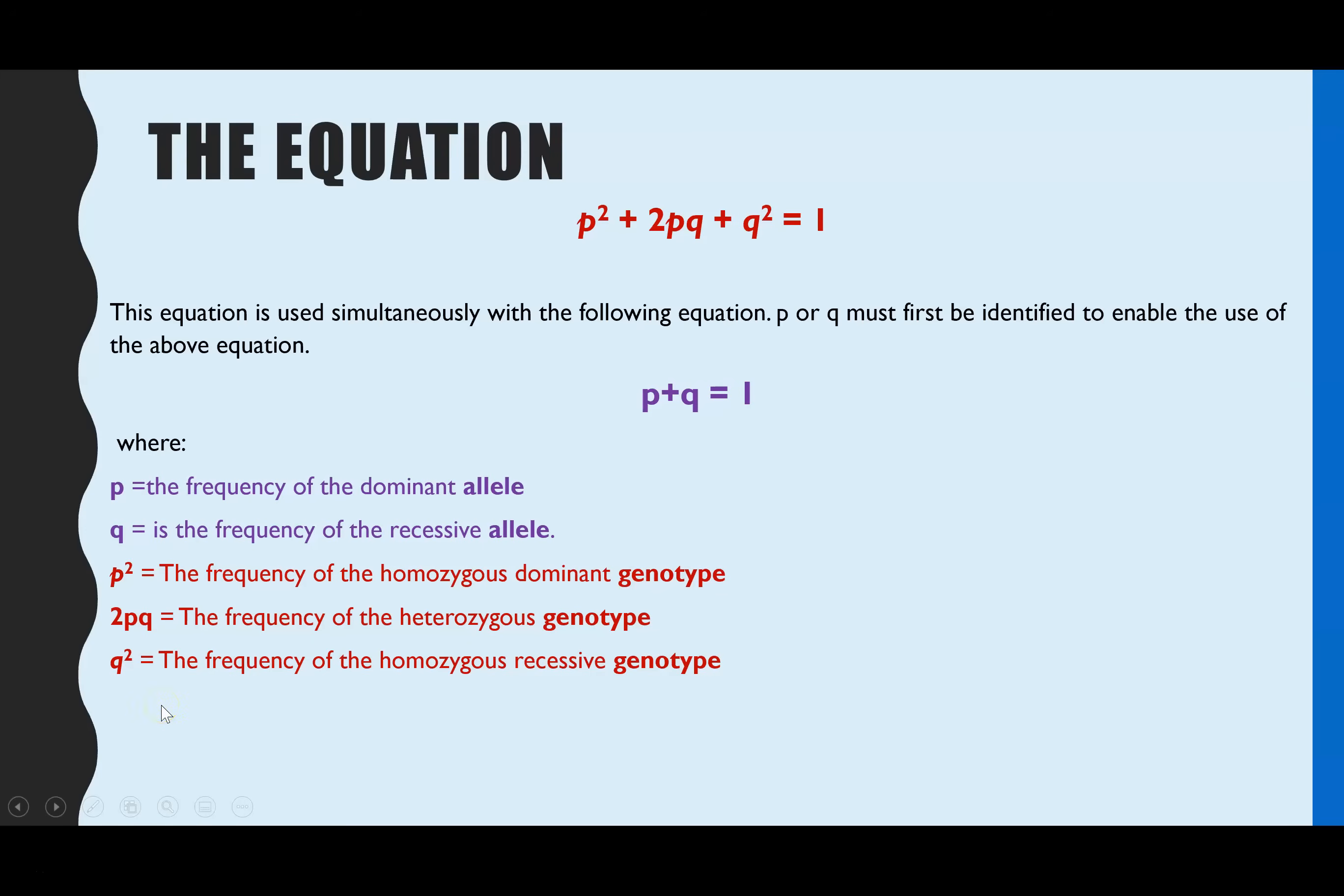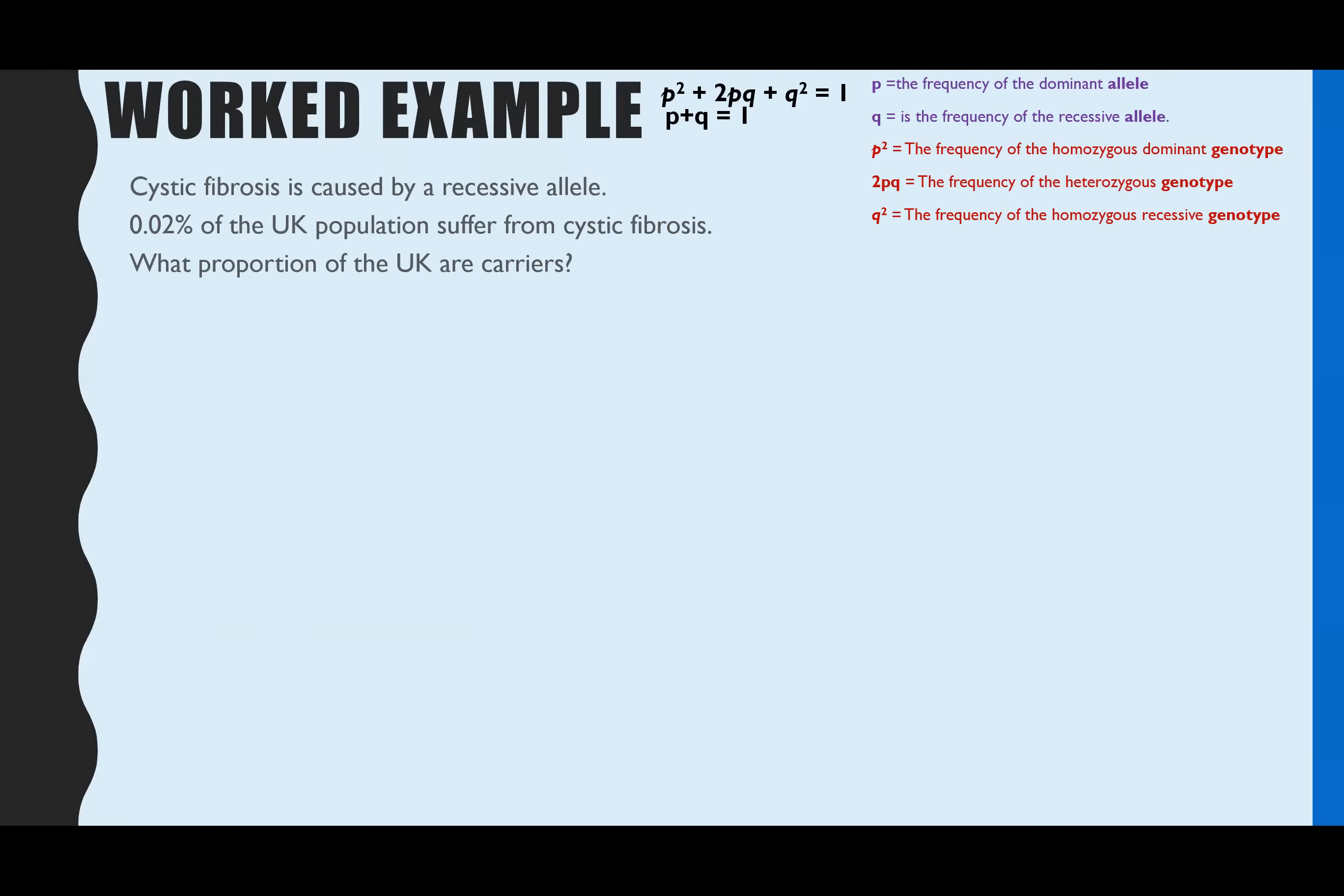We're going to go through some worked examples now, so this hopefully makes a bit more sense and you can see how you could be questioned on this. The worked example that we've got is linked to cystic fibrosis. We're told that it's caused by a recessive allele. 0.02% of the UK population suffer from cystic fibrosis. And the question is, what proportion of the UK are carriers?